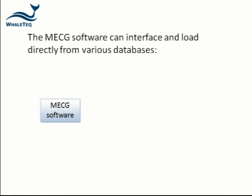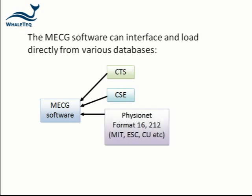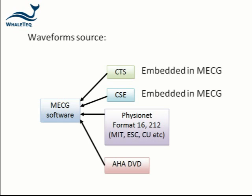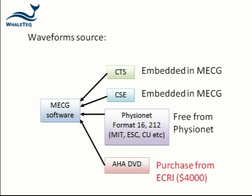The MECG software can interface with various databases. Each database has both waveforms and reference values. For CTS and CSE databases, the waveforms are embedded in the MECG software. For PhysioNet waveforms such as MIT, ESC and CU, these are available for free from the PhysioNet website, while the AHA database must be purchased directly from ECRI at around $4,000.